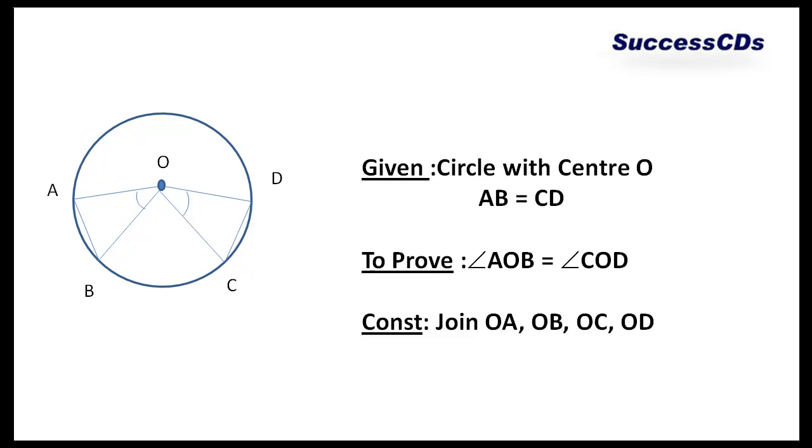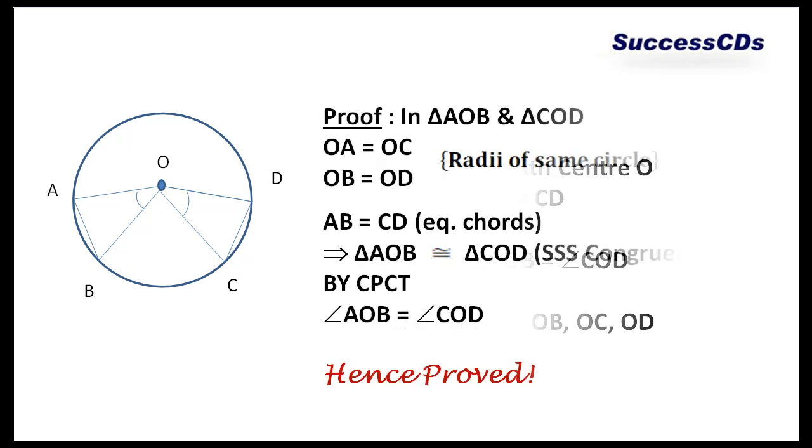Now what we do is join OA, OB, OC and OD. If I look at the proof now, in triangles AOB and COD, OA is equal to OC, radii of the same circle. Similarly, OB is equal to OD, radii of the same circle. Now, AB and CD are equal. Why? It has been already given these are equal chords.